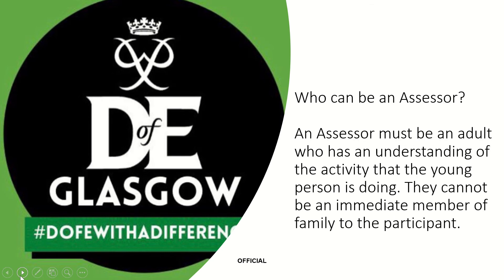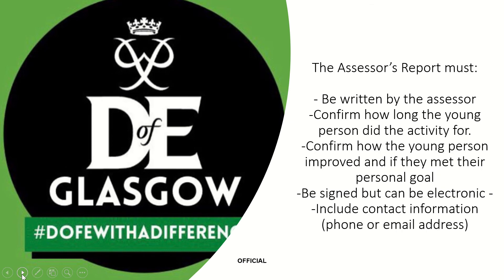An assessor can be anyone that fully understands the activity that you're doing, but it can't be an immediate member of your family. It could be your DV leader though, as long as you've got enough evidence to prove what you're doing. It should be written by the assessor, confirm how long you've done your activity for and that you've met your goals. It must be signed and have contact information or email address for your assessor, but the signature can be electronic.